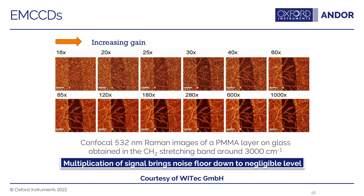EMCCDs are also useful for fast readout rates. Read noise increases as readout rate increases, but by amplifying your signal, you can account for the increase in readout noise and scan at faster rates while still maintaining a good signal-to-noise ratio. This is useful for chemical mapping, where you're collecting perhaps thousands of points and need a fast readout rate while maintaining good signal-to-noise ratios.